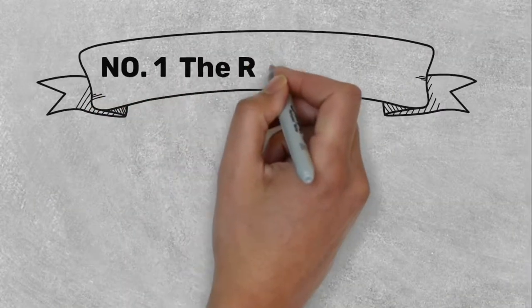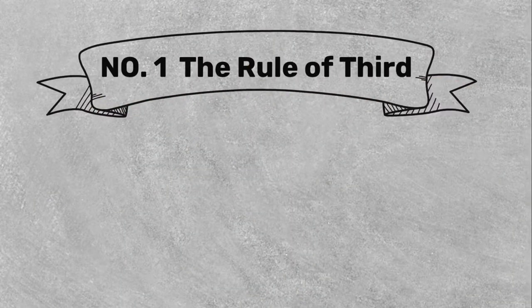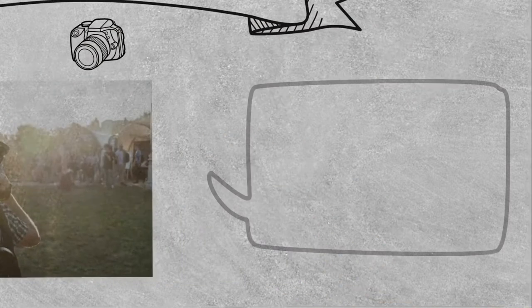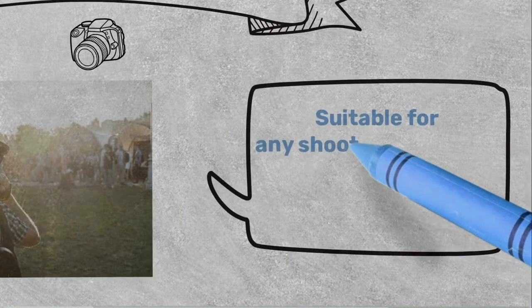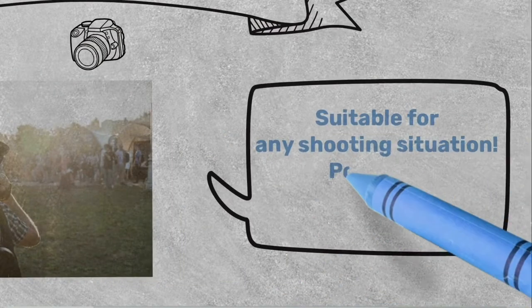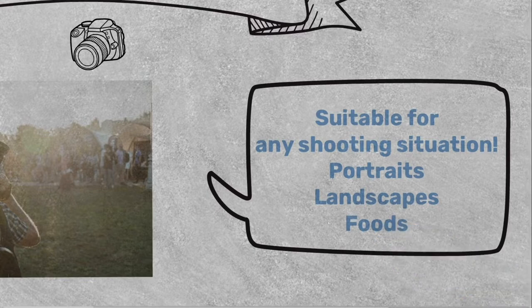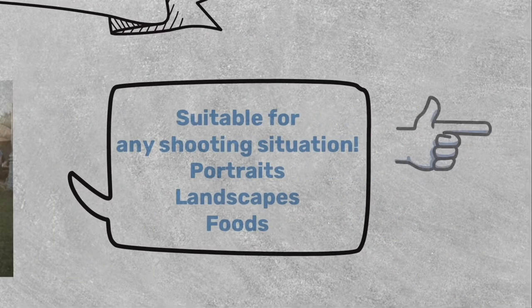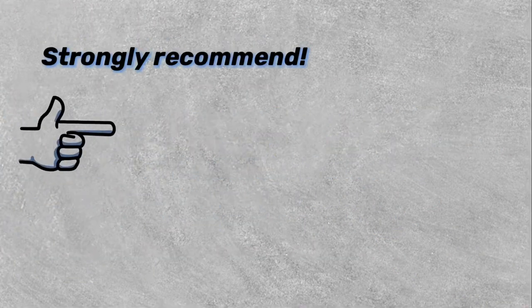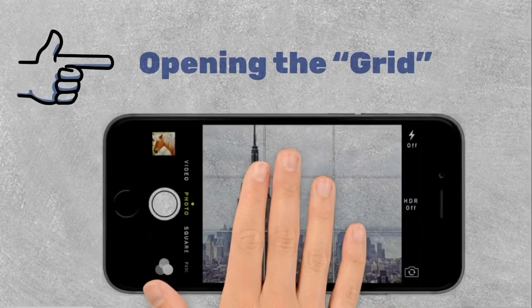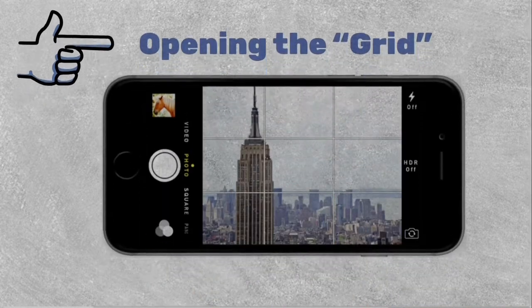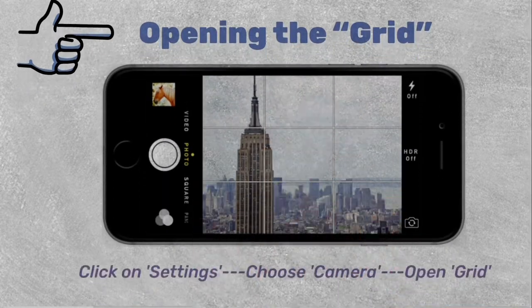So let's get started! First of all, the rule of thirds. This method of composition is suitable for any shooting situation such as portraits, landscapes, or food. Before shooting, I strongly recommend opening the grid in your phone. It can help you find the composition more easily.